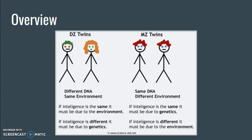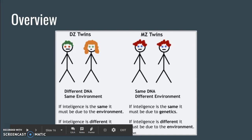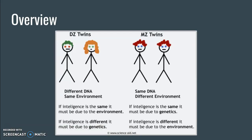According to Turkheimer, for those living in harsher environments, it is harder for their good genes to shine through. If fraternal twins who share the same environment but have different DNA have the same level of intelligence, then intelligence must be nurtured by the environment; if the level is different, then it must be genetic. Similarly, if identical twins who share the same DNA but different environments display the same level of intelligence, then it would be natural — part of their genetics. In the opposite case, if their intelligence is different, it must be caused by the environment.